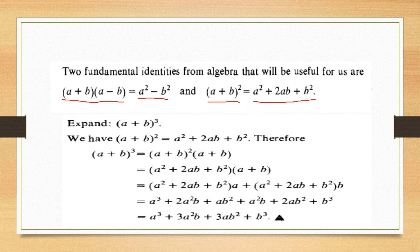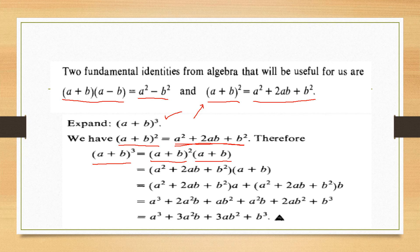If we have to expand (a+b)³ and we are not aware of the formula, we can derive it using the known identity. Since (a+b)² = a² + 2ab + b², we can write (a+b)³ as (a+b)² multiplied by (a+b). Multiplying out and simplifying, we obtain the formula: a³ + 3a²b + 3ab² + b³.